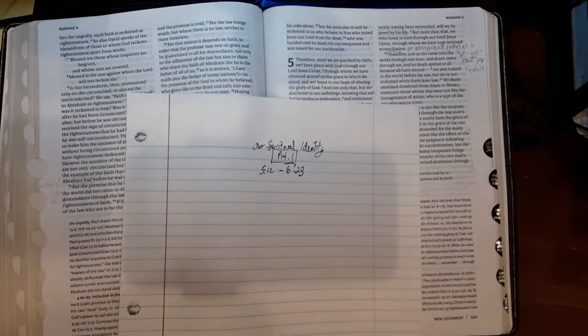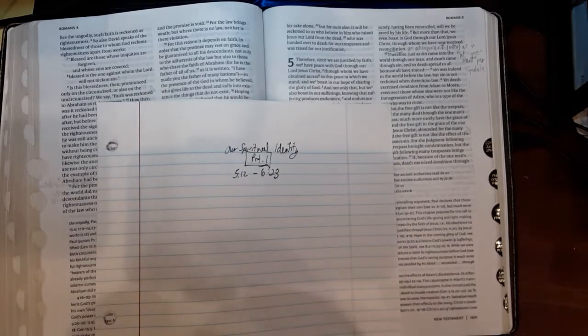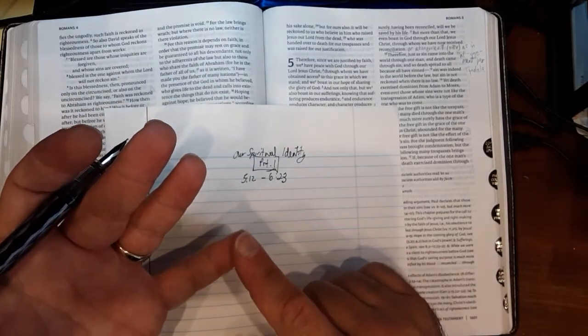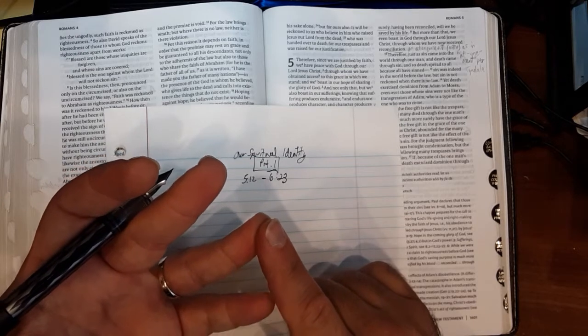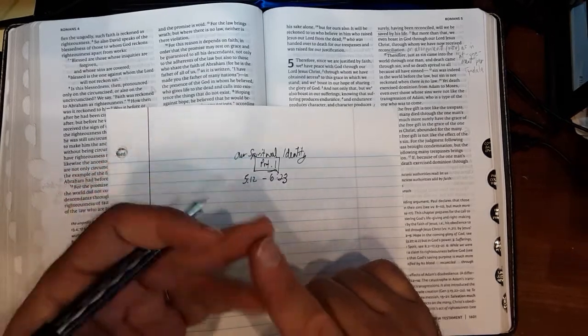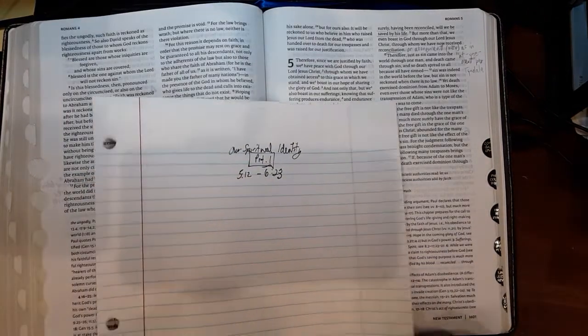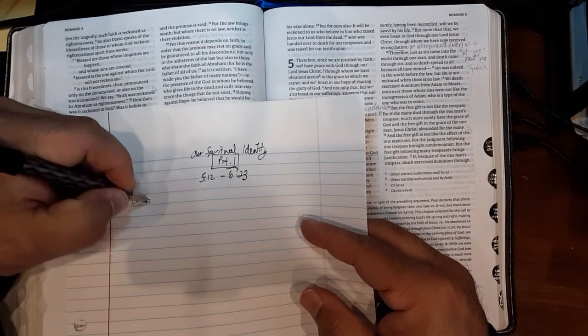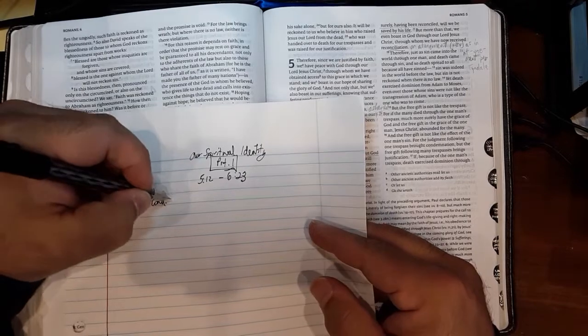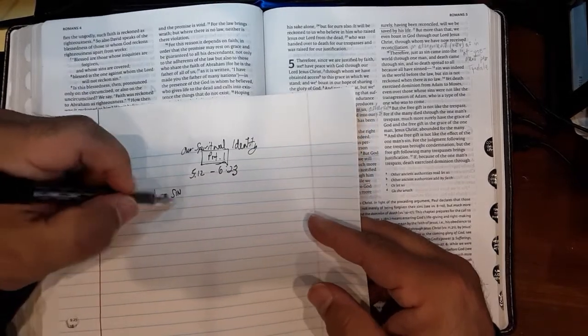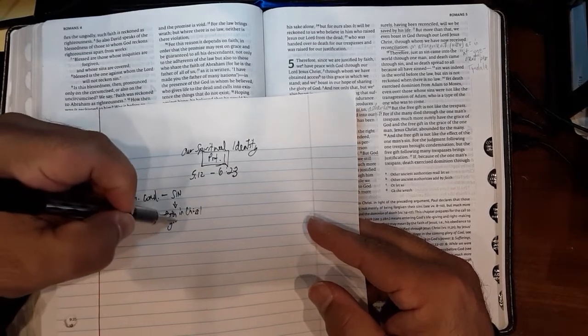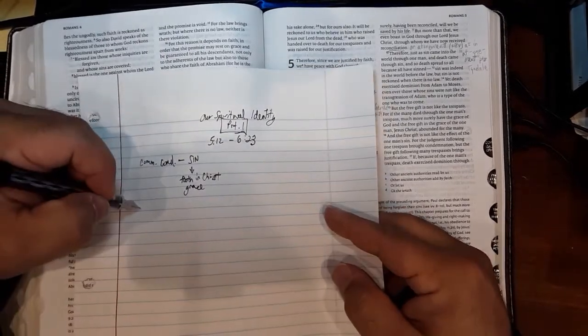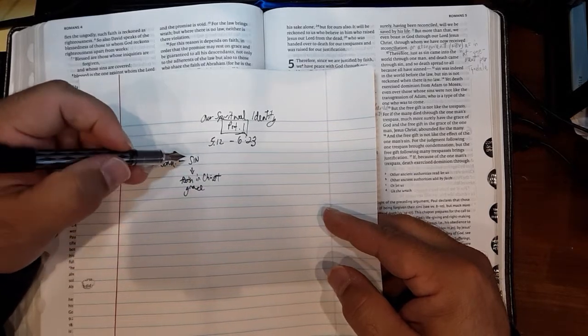Our outline for the study is really built around his theme of uniting these various factions within the Roman churches. We've already gone over Paul talking about our common condition, which is Romans 1 through 3. The last video was on our common history, Romans 4. And now we're getting into our common spiritual identity. So just to recap, the common condition that Paul is using to unite these factions is sin, with a common antidote, which is faith in Christ, through God's grace, not through wealth or honor or ethnicity.